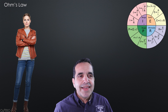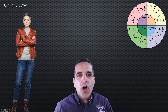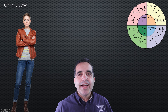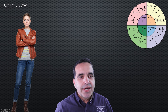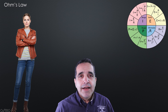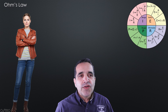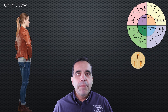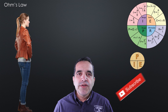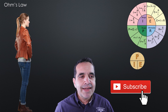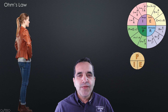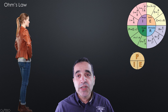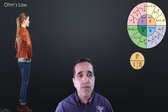This is the Ohm's law wheel with all the formulas to find wattage, amperage, voltage, and resistance. These are all the formulas. Here we have the power wheel, which will help us memorize three of the 12 formulas in this wheel.